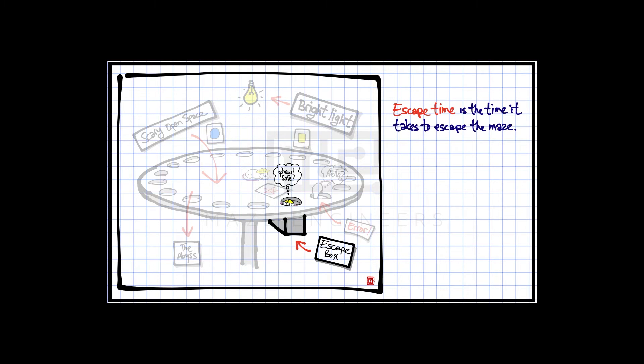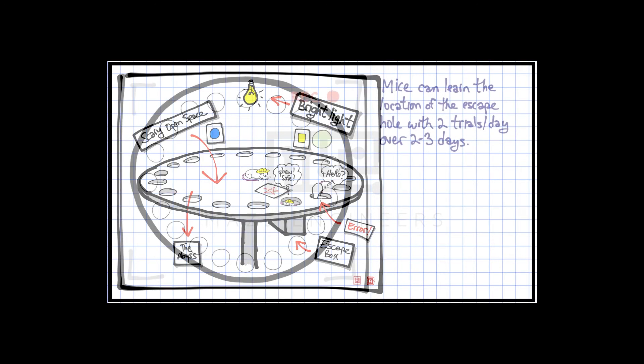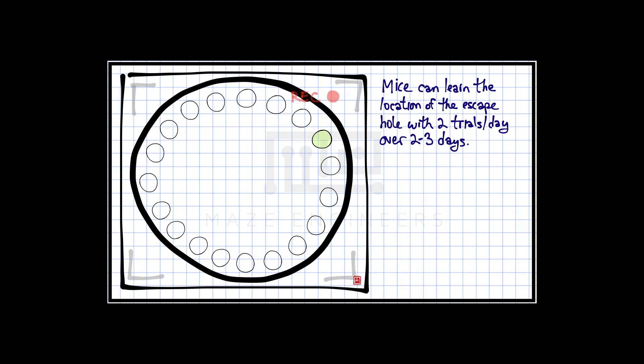Escape time is the time it takes to escape the maze. Mice can learn the location of the escape hole with two trials per day over two to three days.